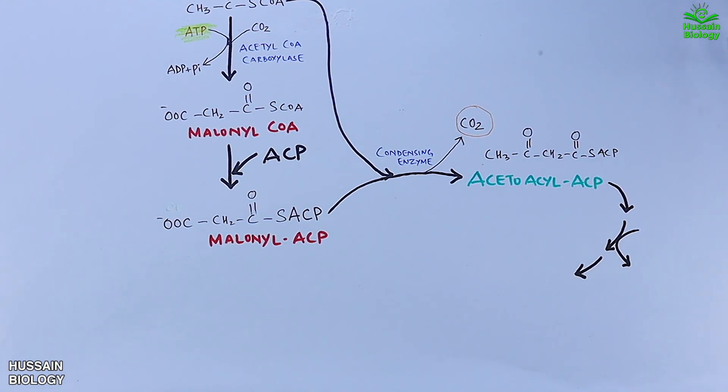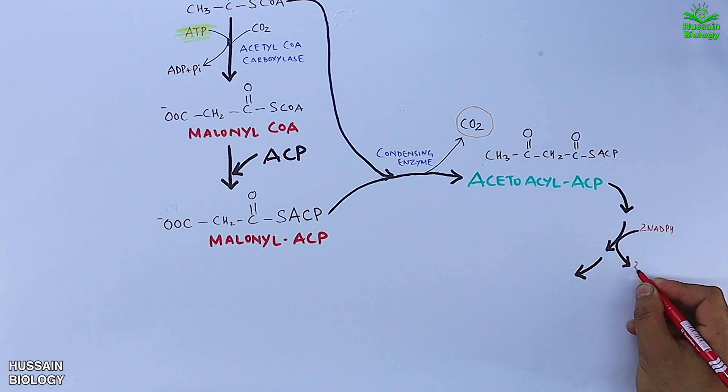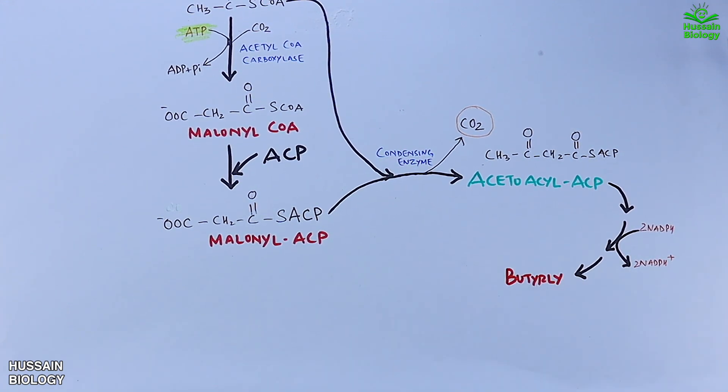The keto group is removed by the action of three enzymes to form a new acyl chain, butyryl ACP. This butyryl ACP is a four-carbon long chain fatty acid. From this butyryl ACP, we can get free fatty acid and ACP.